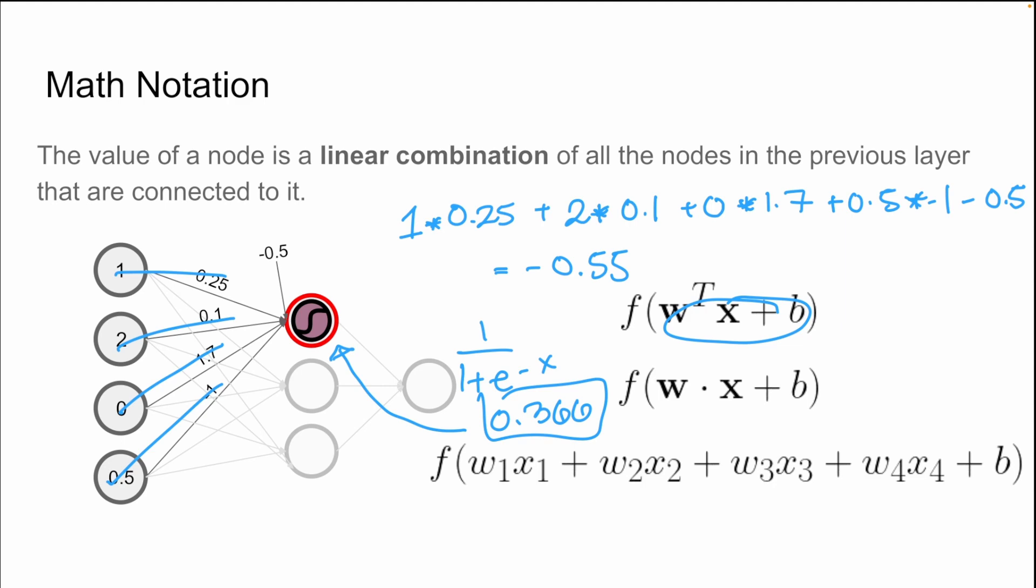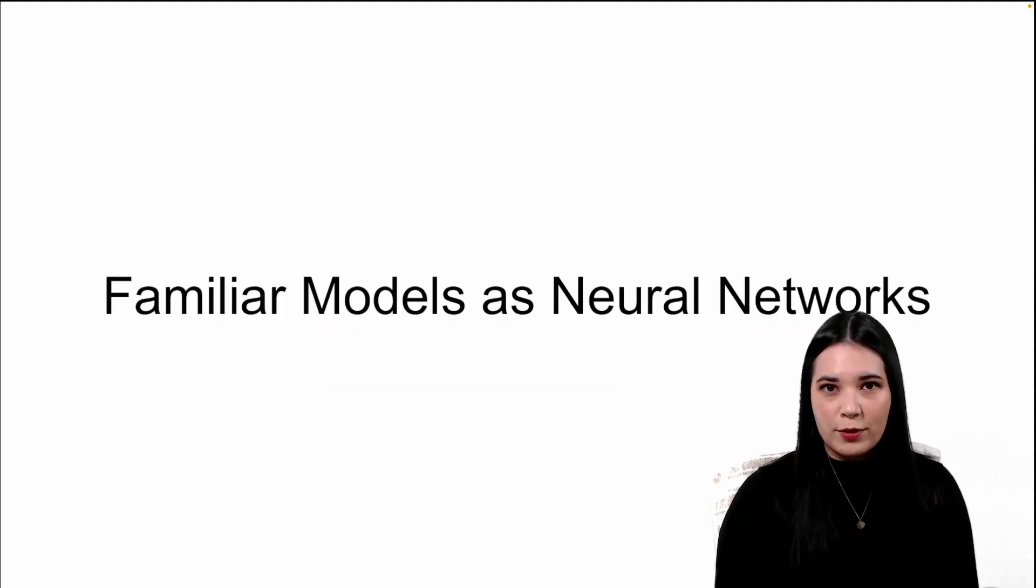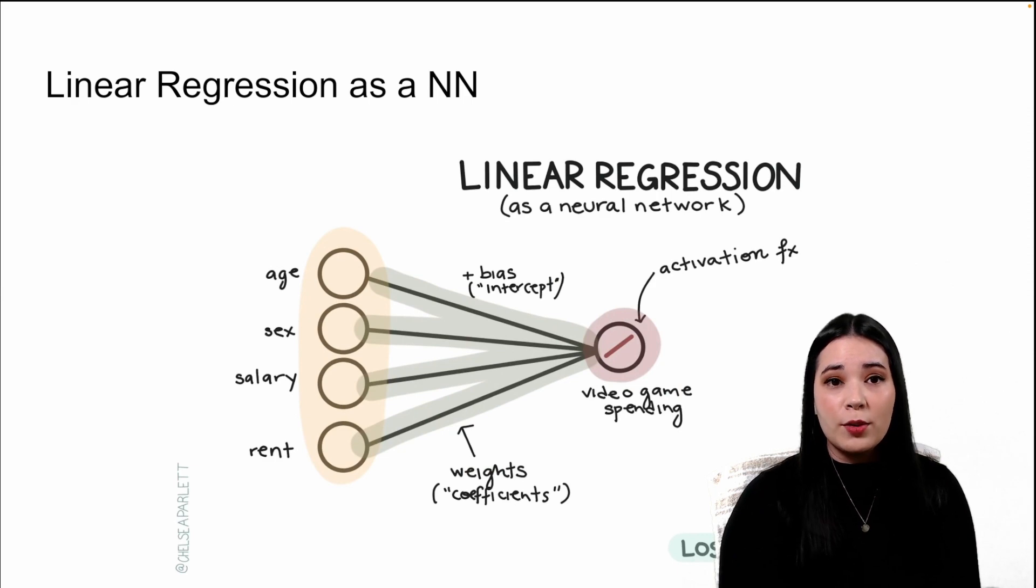It's a linear combination of all of the previous nodes, plus a bias, fed through a sigmoid activation function. Now that we've learned the basic architecture of neural networks, let's look at some familiar models from 392 as neural networks. First, let's start with linear regressions. A linear regression is literally just a linear combination of values. So our neural network structure is going to be very simple.